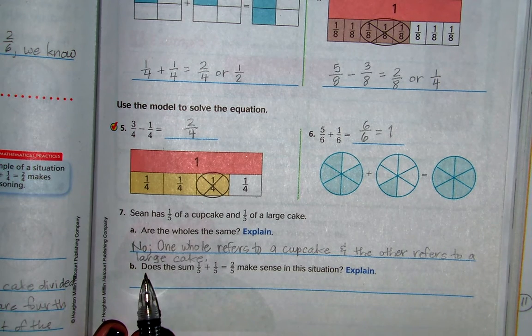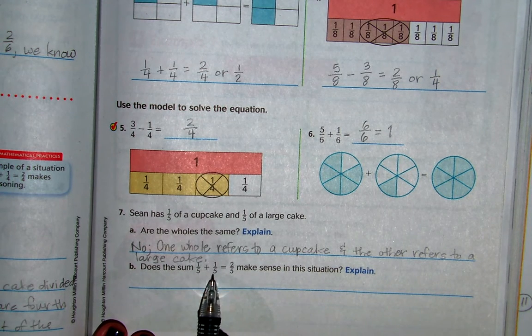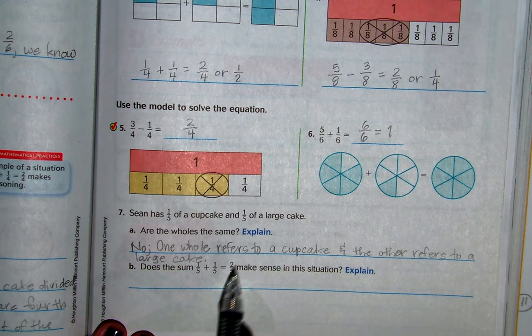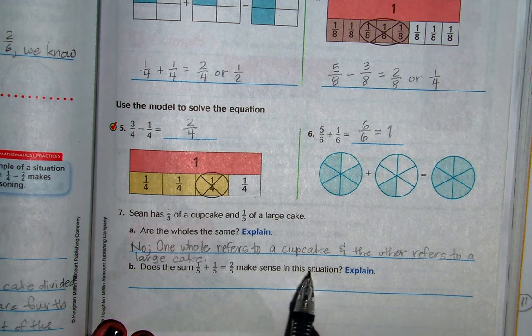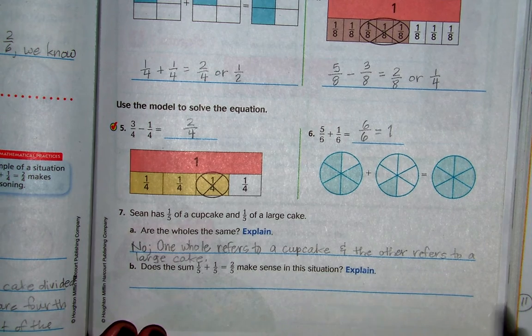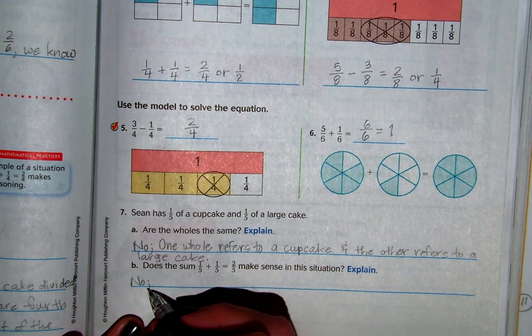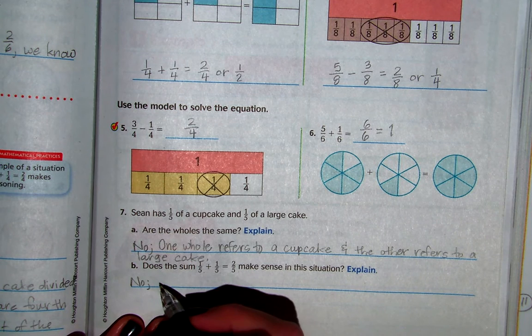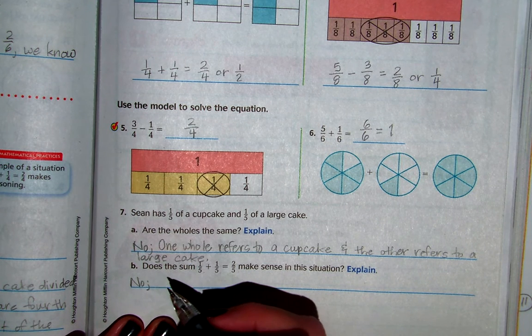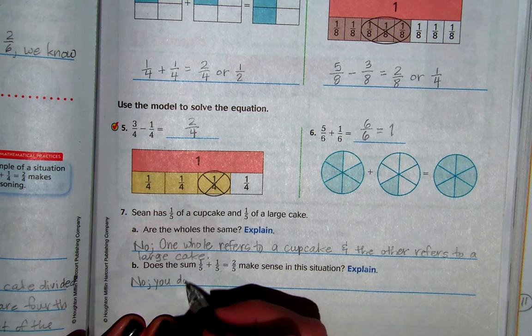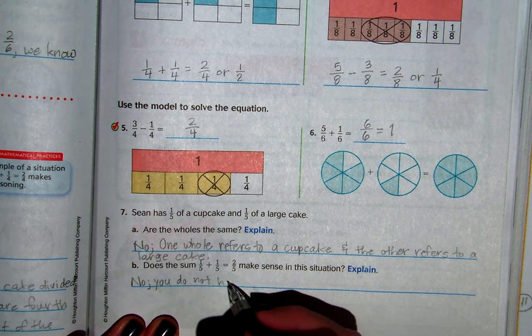B, does the sum 1 fifth plus 2 fifths, I mean 1 fifth plus 1 fifth equal 2 fifths, make sense in this situation? Explain. No, it does not make sense.